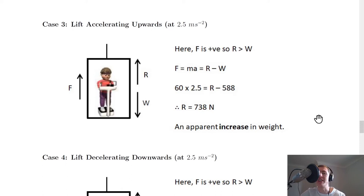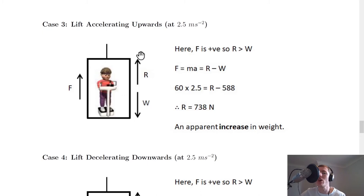Case 3: the lift is accelerating upwards at 2.5 m/s². The lift is moving upwards and speeding up, so there must be an unbalanced force acting upwards. This means the reaction force R upwards must be greater than the weight W downwards.